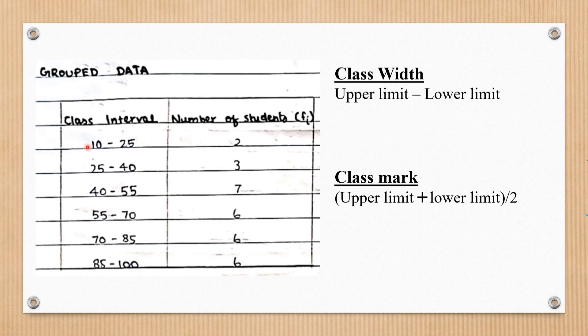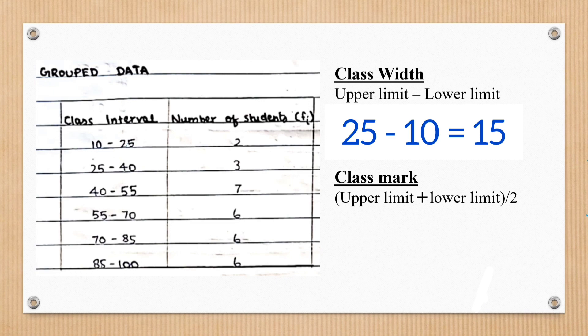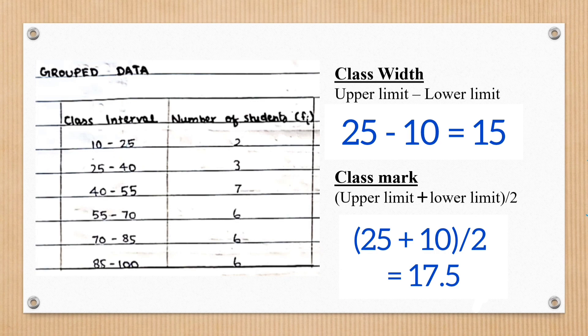In the first class interval, let's consider the lower limit as 10 and the upper limit as 25. We consider two things: class width and class mark. Class width is the upper limit minus the lower limit — so 25 minus 10 equals 15. The class mark is the upper limit plus the lower limit divided by 2: 25 plus 10 divided by 2 is 35 divided by 2, which is 17.5.